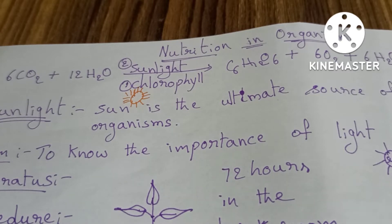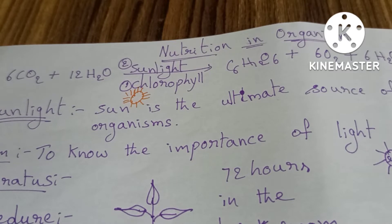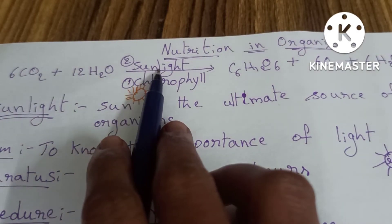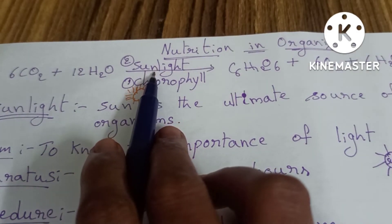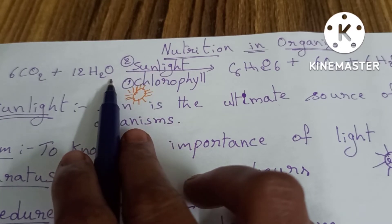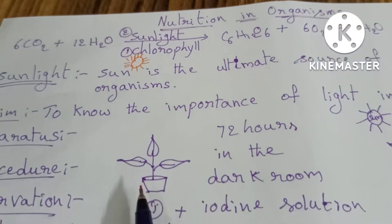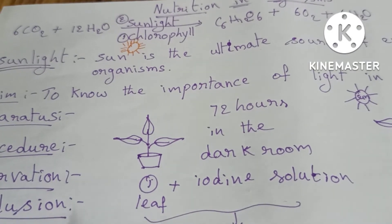In science we need proof. We need to prove whether sunlight is used in photosynthesis or not. We'll prove this through an experiment.